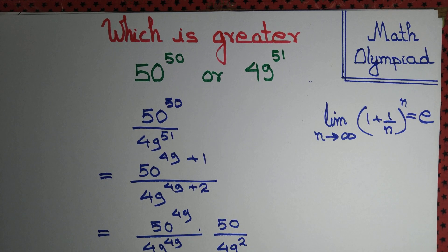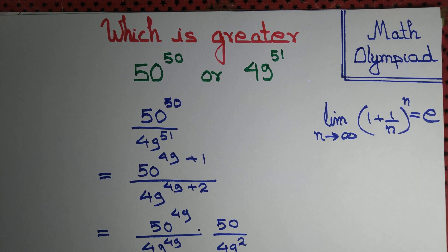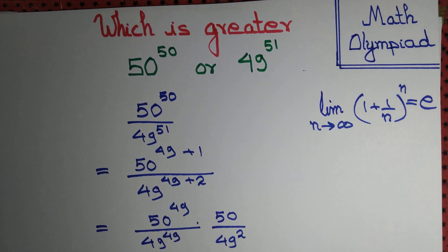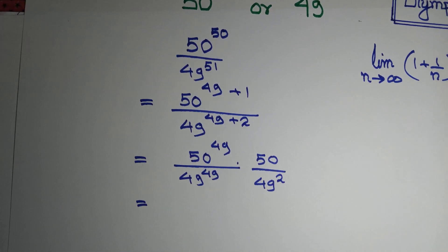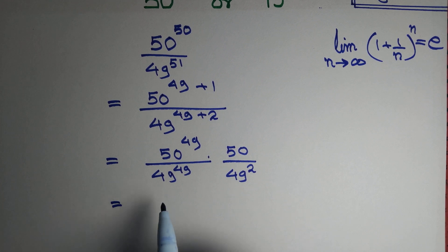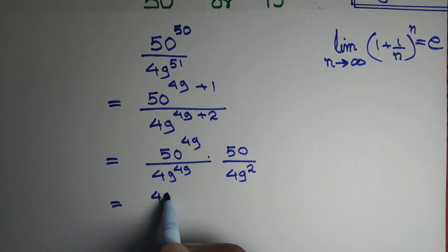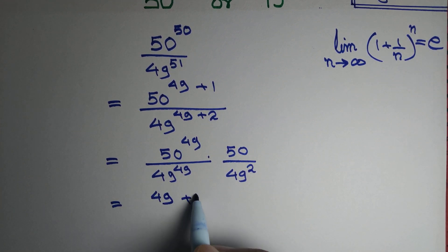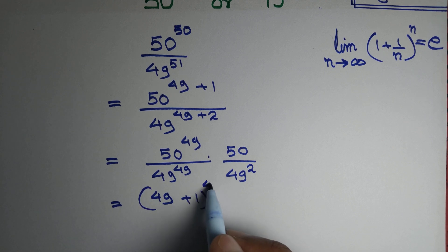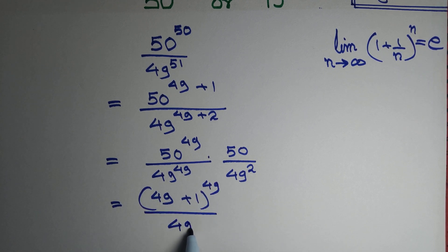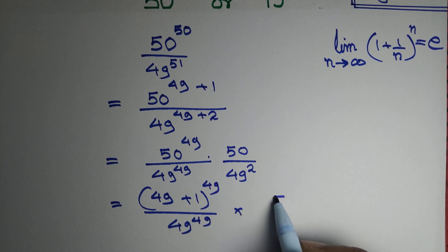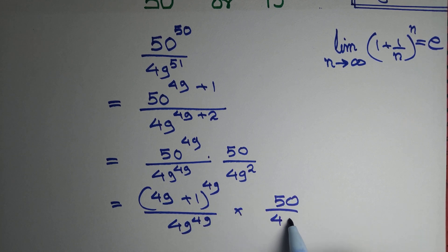We want to write most things in terms of 49. So we write it as (49+1)^49 divided by 49^49, multiplied by 50 over 49².